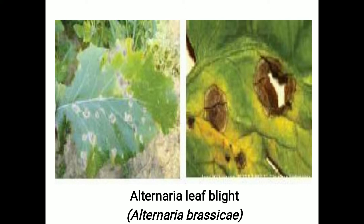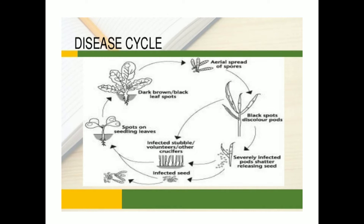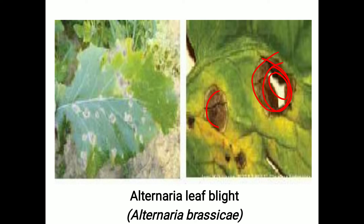If humid weather conditions are present in the atmosphere, large lesions with concentric rings are observed on the leaves — this is the typical symptom. If the infestation is severe, linear spots appear on different parts of the plant, for example on the petioles, stem, and seed pods.